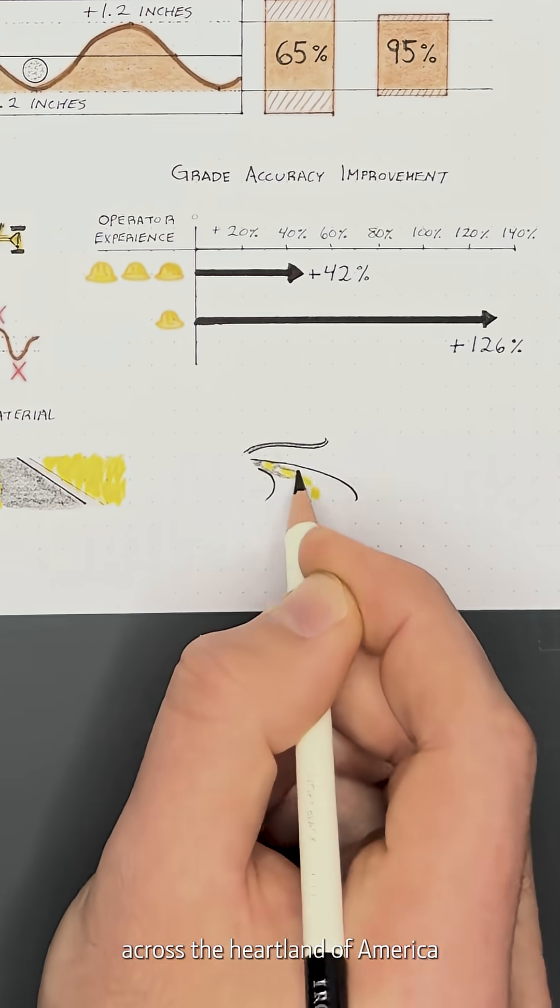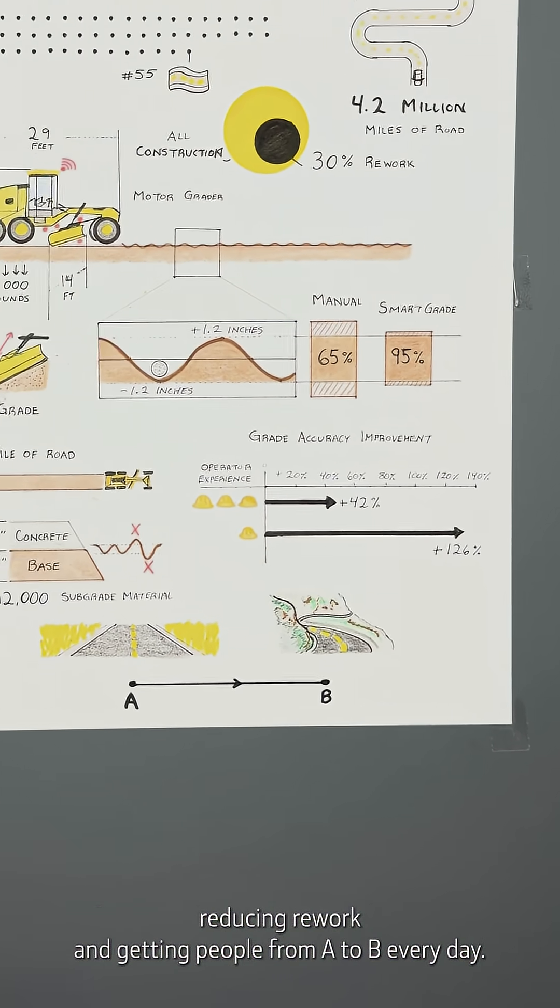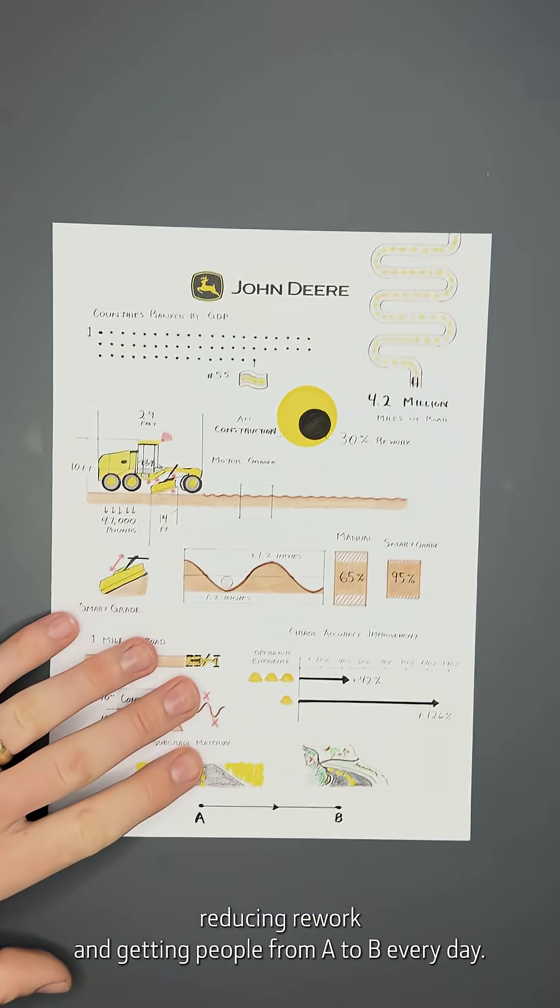So whether you're building a long, flat road across the heartland of America or winding through the Rocky Mountains, SmartGrade and Deere are decreasing inputs, reducing rework, and getting people from A to B every day.